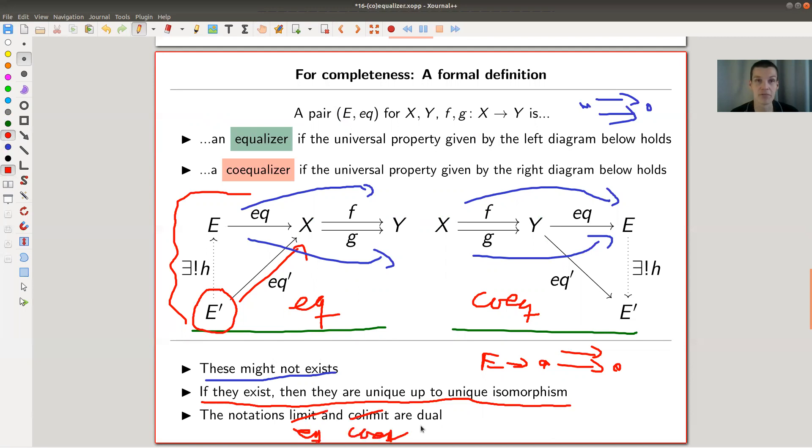These notions are dual, but I shouldn't have written limits and co-limits, I should have written equalizers and co-equalizers. I'm already ahead of myself. Of course, there are also limits and co-limits, and this will be dual. These will be certain types of limits and co-limits.